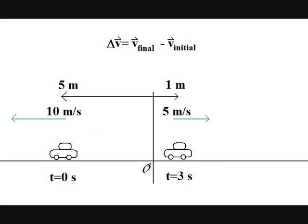This is a vector equation, so let's get some more practice adding vectors. First, for the sign convention, the initial velocity is to the left, so it is negative 10 meters per second. The final velocity is five meters to the right, so it is positive five meters per second.